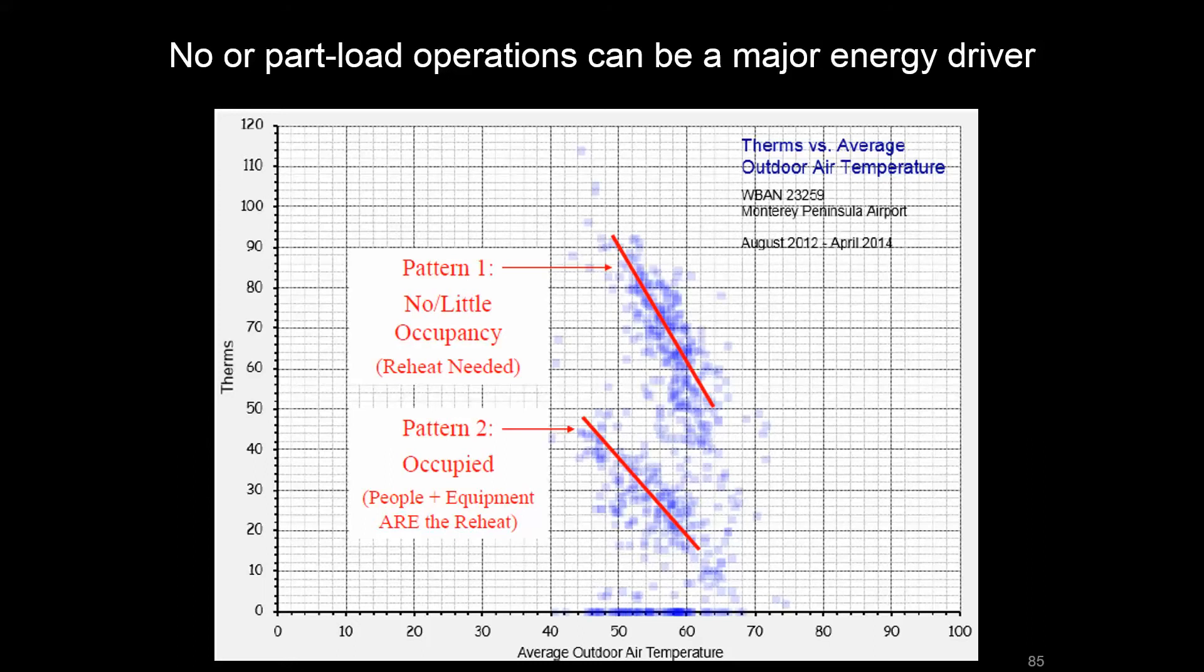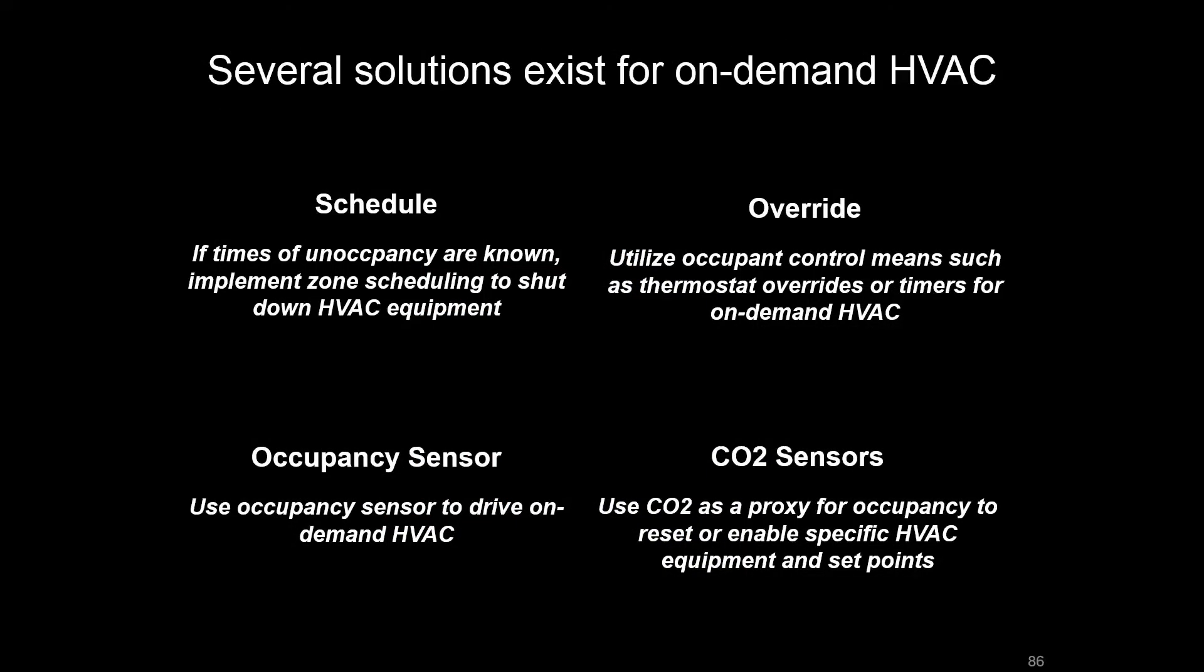One thing to keep in mind is that when you see no or part load operations, those can be a real major energy driver. And there are solutions for things like on-demand HVAC, where you have those really big swings from high load to no or low load. They could involve scheduling a space if you know the schedule, relying on something like an override at the thermostat, a push button for folks to engage their HVAC. There's ways that you can take an occupancy sensor and incorporate that into your automation system. Or something like CO2 as a proxy, and having that be an indication for what your load is, if your load is predominantly people-based.